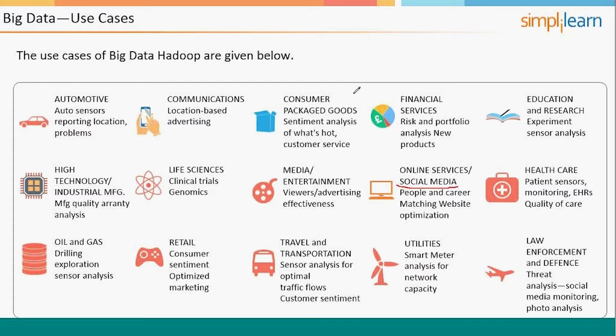In the advertisement industry, there are two types of advertisement modes which are very prevalent. One is called mass advertisement and one is called targeted advertisement. What is mass advertisement? Let's take an example with two people — one person sitting in the US in New York and one person sitting in India in Bangalore.